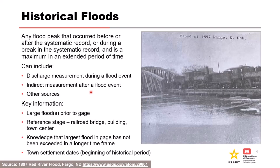Key information would include large floods prior to a gauge. A reference stage might be a railroad bridge or a building in a town center. Finding knowledge that the largest flood on the gauge has not been exceeded in a longer time frame — older than the date of that historic flood — and just knowing when a town settled can help us establish the beginning of our historical period.